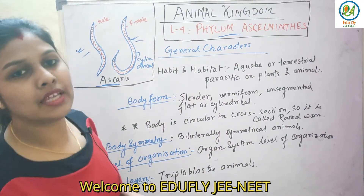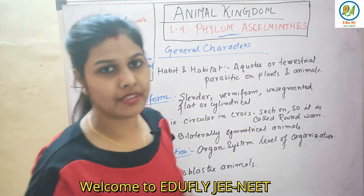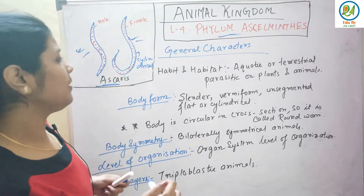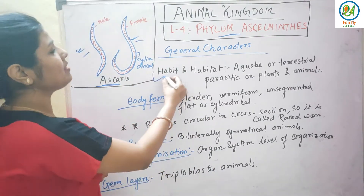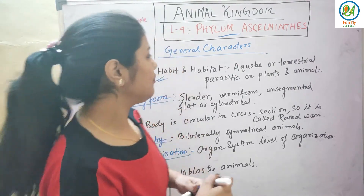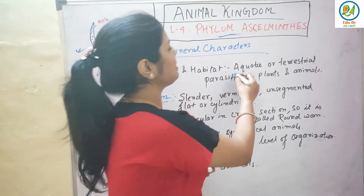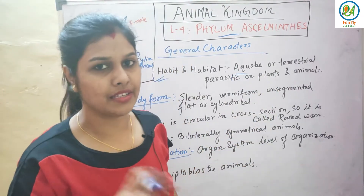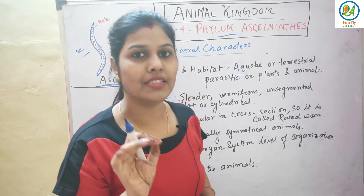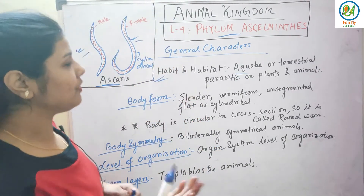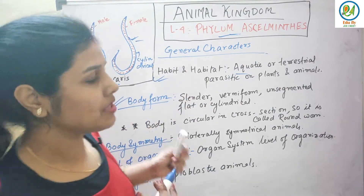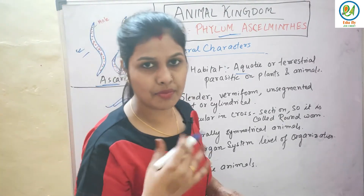Now we'll see the general characteristics of Aschelminthes. First, habit and habitat: where are they found? They may be aquatic or terrestrial and they are parasites on plants and animals.